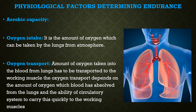Next is oxygen transport. The amount of oxygen taken into the blood from the lungs has to be transported to the working muscles. Oxygen transport depends on the amount of oxygen absorbed by the blood from the lungs and the ability of the circulatory system to carry it quickly to the working muscles. The amount of oxygen absorbed into the blood depends on the speed of blood flow through the lungs and on the blood hemoglobin.